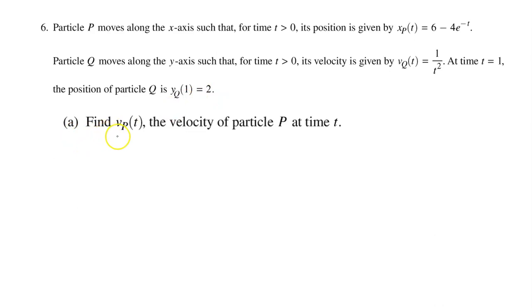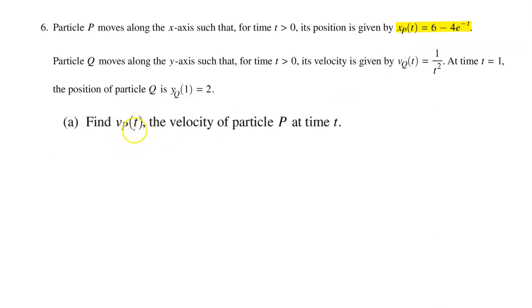Part A: Find vp of t, the velocity of particle P, at time t. We are given the position function and we are being asked to find the velocity function. We know that velocity is the derivative of position.